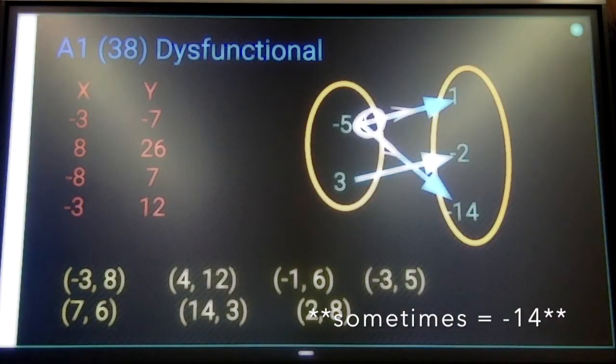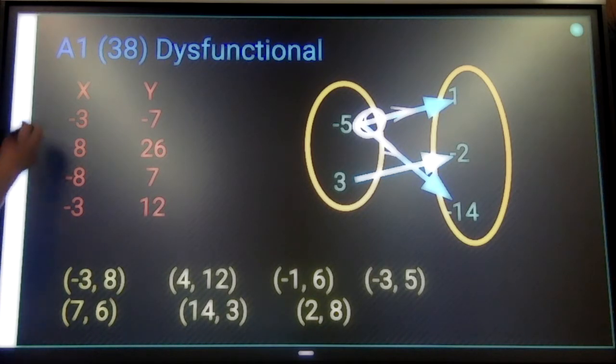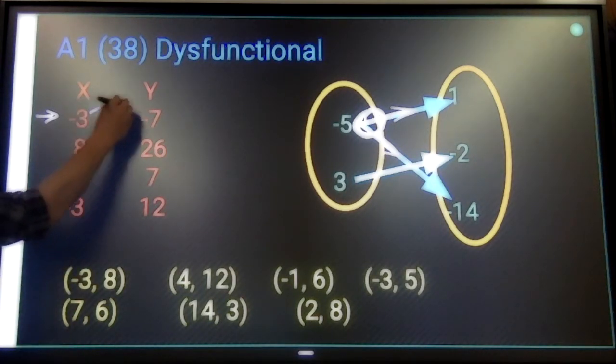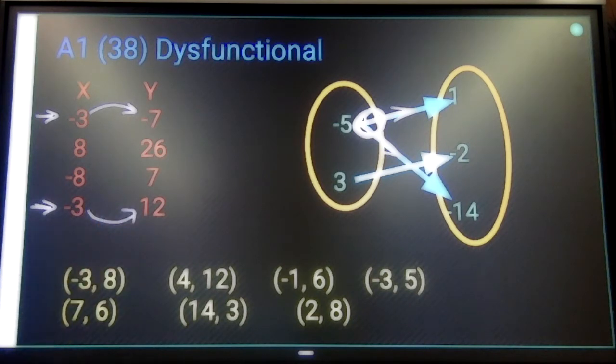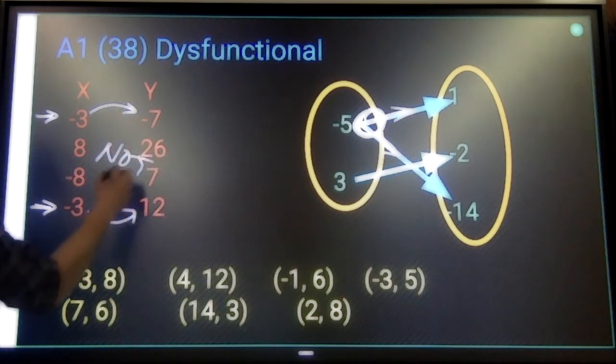In a table, what you're going to be looking for is if there's ever an x value that appears twice, does that x value map to two different things? If it does, then we're not functional.